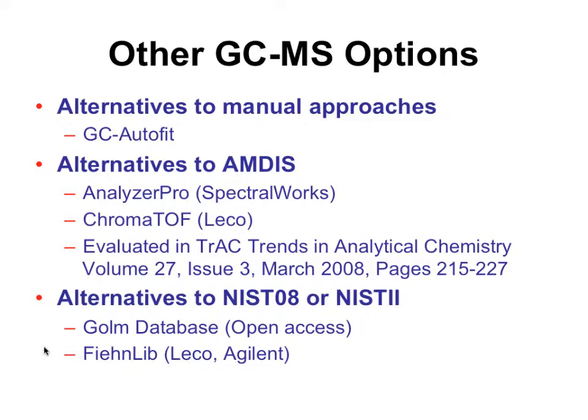There are other tools people use other than AMDIS — Analyzer Pro and ChromaTOF are two examples. There was an evaluation comparing AMDIS, Analyzer Pro, and ChromaTOF, and in that one Analyzer Pro won, though it was six years ago and some have gotten better. The AMDIS one hasn't changed — it's been out there for decades. There are other databases more oriented towards metabolomics: Oliver Fiehn developed the Fiehn library database, a lot of which was sold to LECO and Agilent. And then the GOLM database is an open access one maintained in Germany.